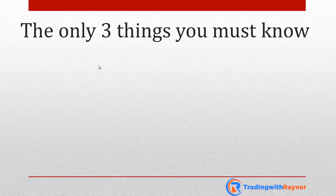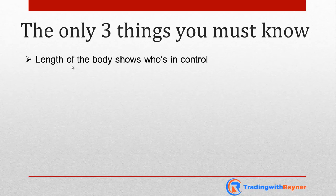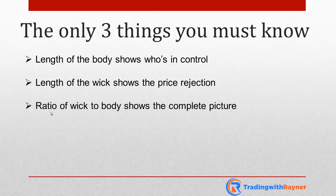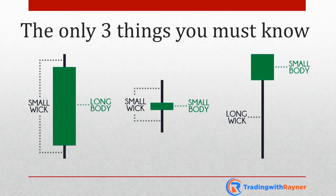The first thing you must know is number one: the body. The length of the body shows you who's in control. If you have a longer body — let's say a bigger bullish candle with a larger body — it's telling you that the buyers are obviously in control. The second thing is the length of the wick, because it shows you price rejection — where did price get rejected, at the highs or at the lows. And the third thing you want to look at is the ratio of the wick to the body to get a complete picture.